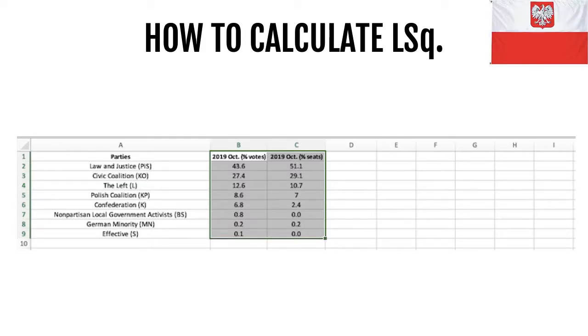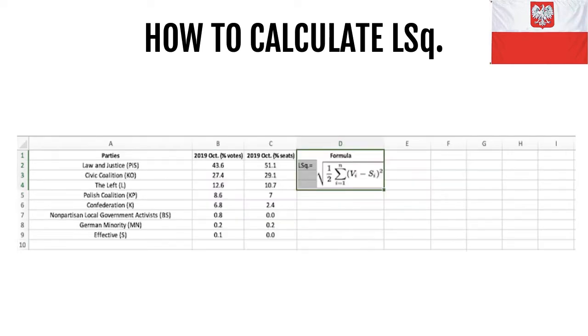Let's try to see with another example. Here I have once again the electoral results of the Polish parliamentary elections in October 2019. As usual, we need to have both the percentage of votes and the percentage of seats and apply Gallagher's index.